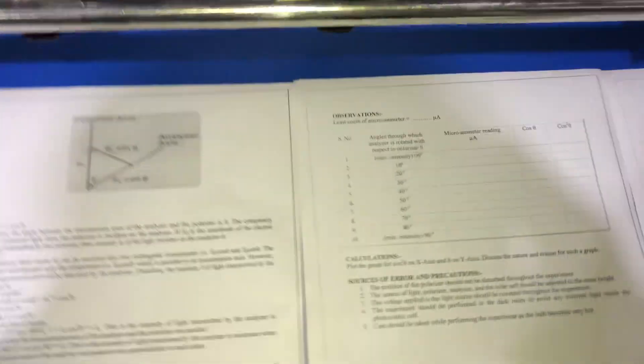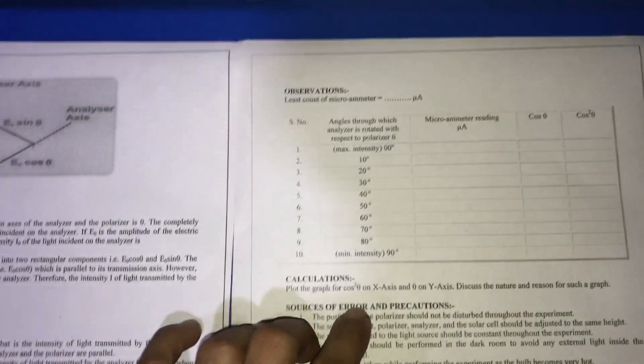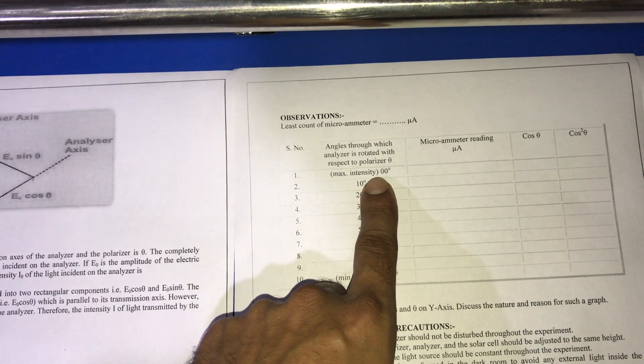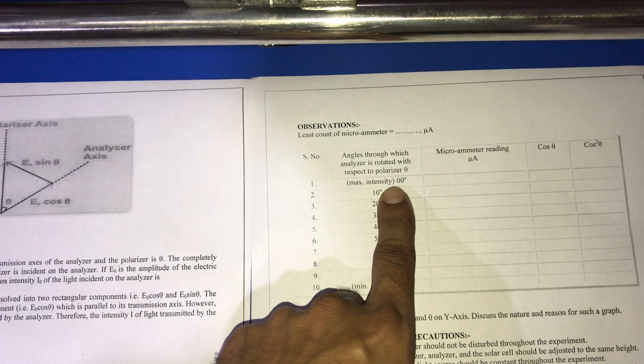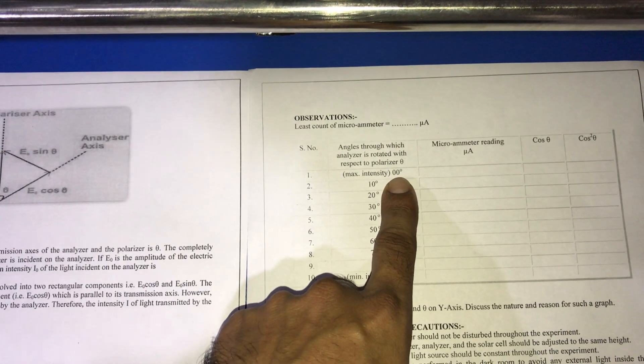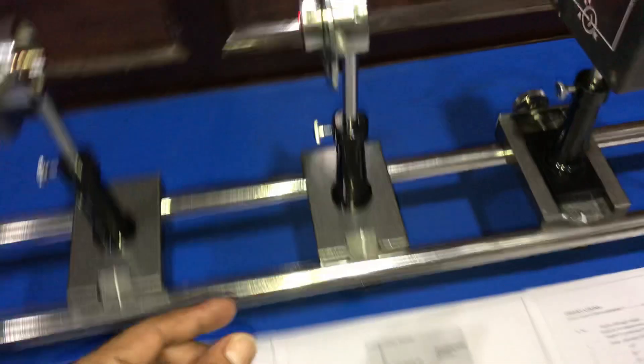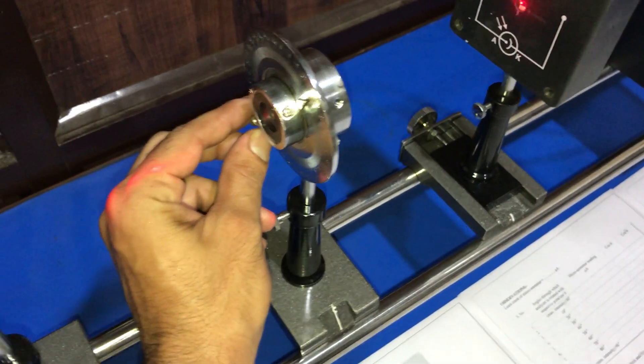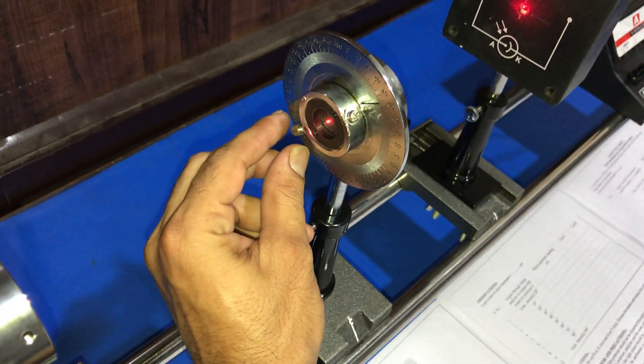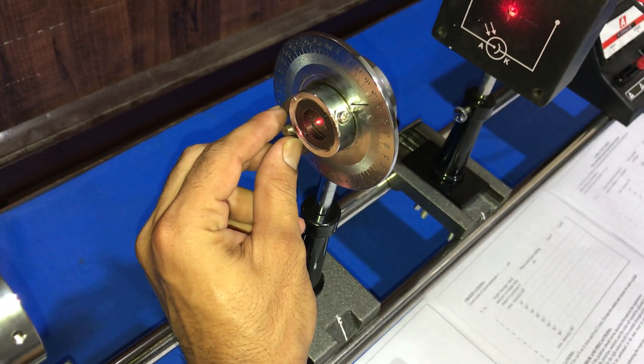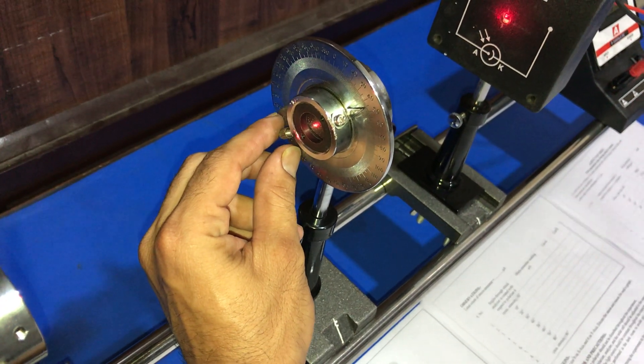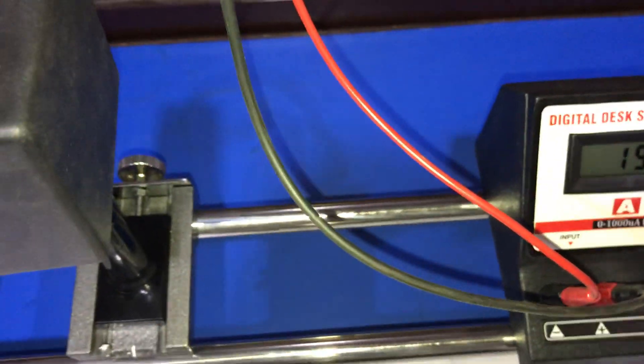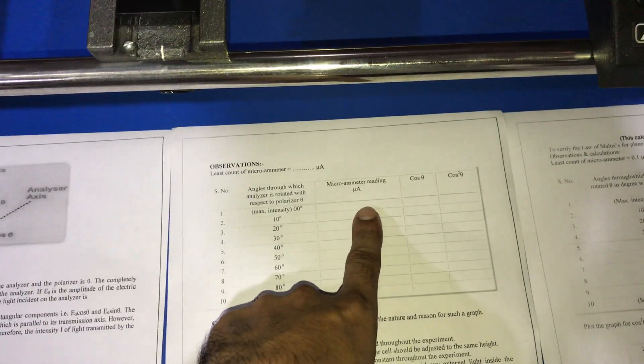This is the stage when the angle between polarizer and analyzer is 0 degrees. Now, we carefully rotate the knob for 10 degrees and note down the value of microammeter reading.